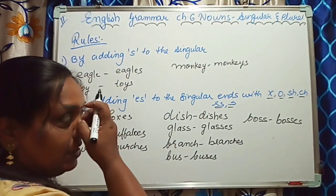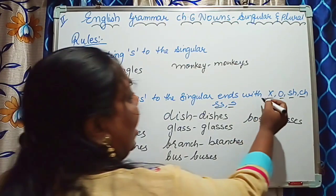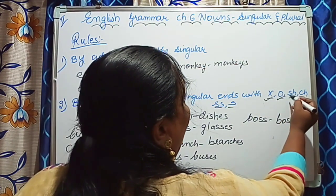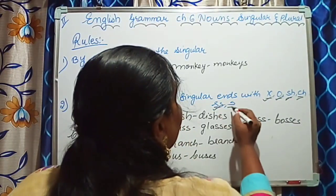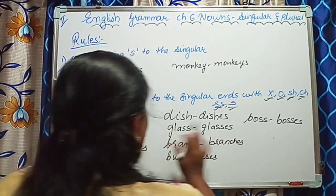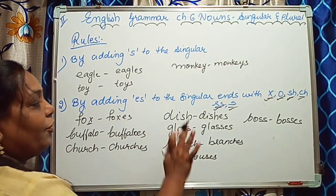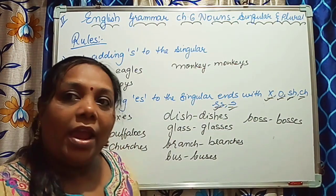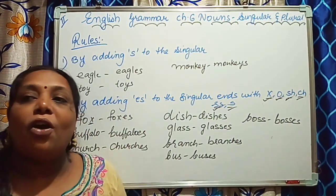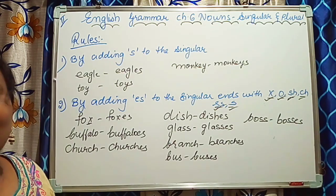You just look at the end of the word — X, O, S, SH, CH, or double S. In all these words, in the plural form we just have to add ES.